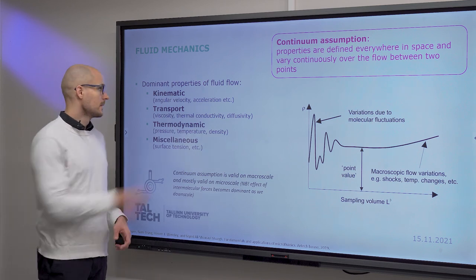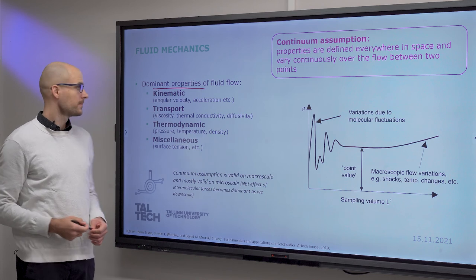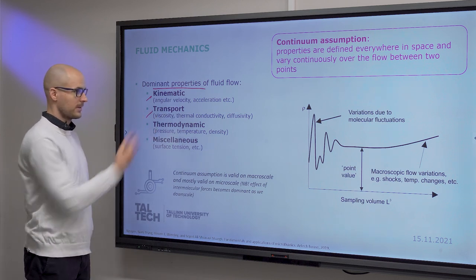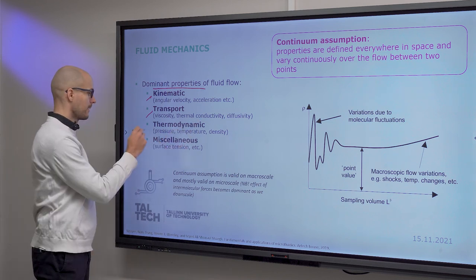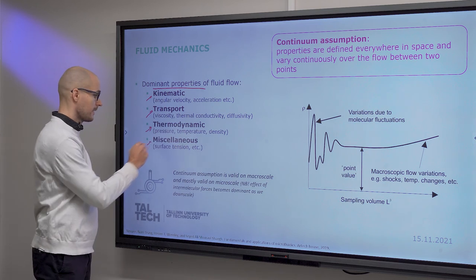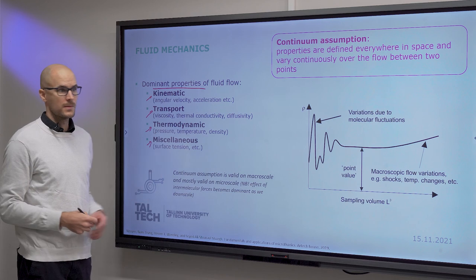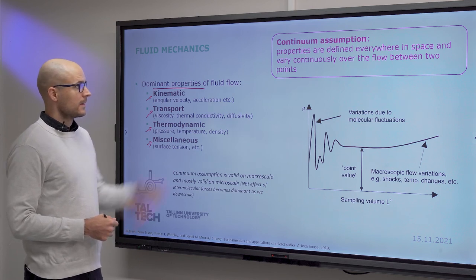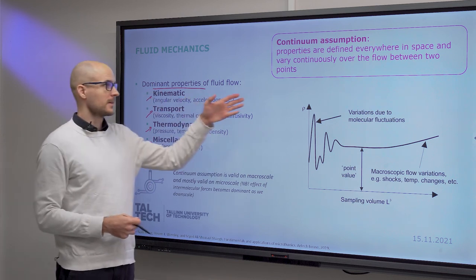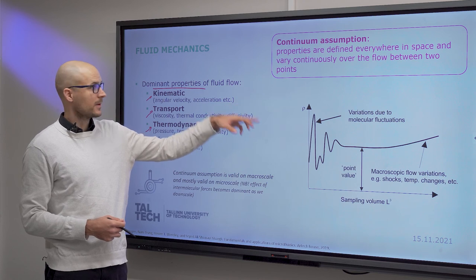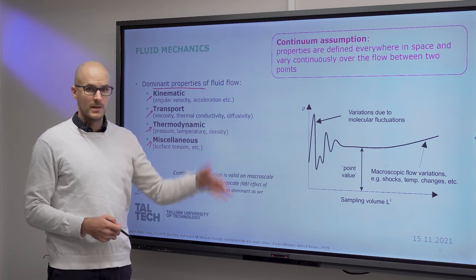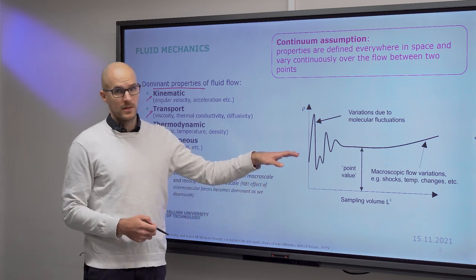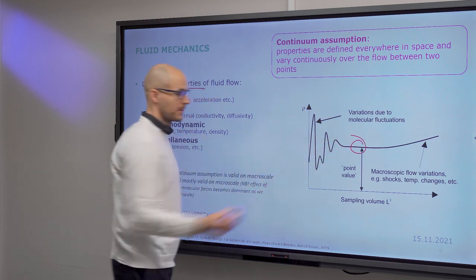First of all, what dominant properties does fluid flow have? It has kinematic properties such as acceleration, transport properties such as viscosity, diffusivity also belongs here, thermodynamic properties like temperature, and other properties like surface tension. The continuum assumption means that properties are defined everywhere in space and vary continuously over the flow between two points. This is valid in the range that microfluidics will be in.